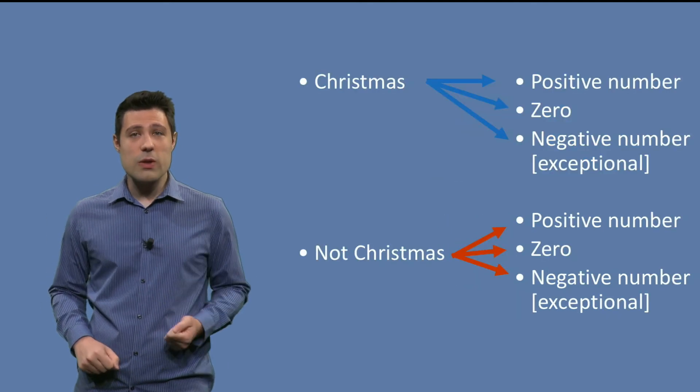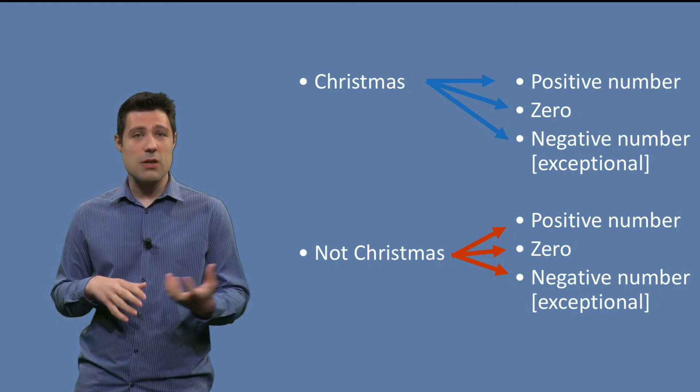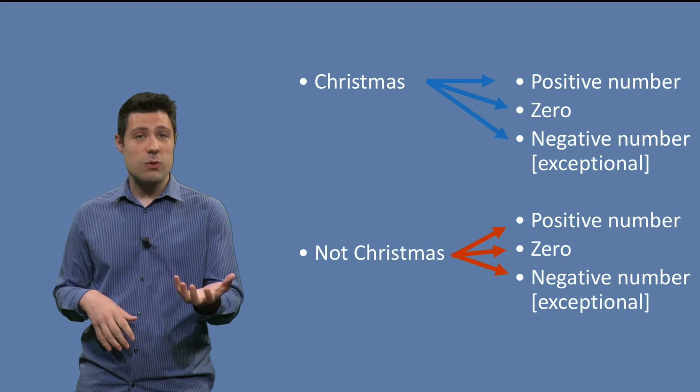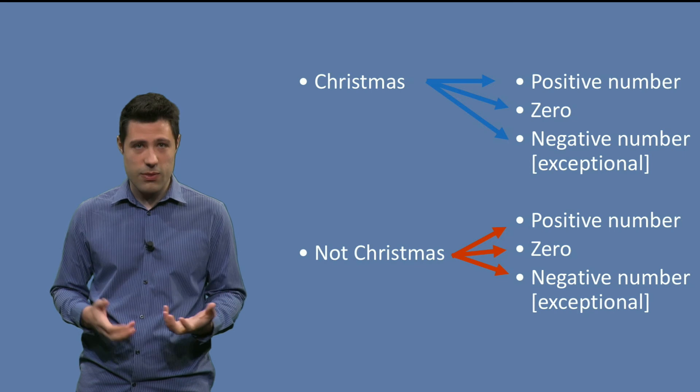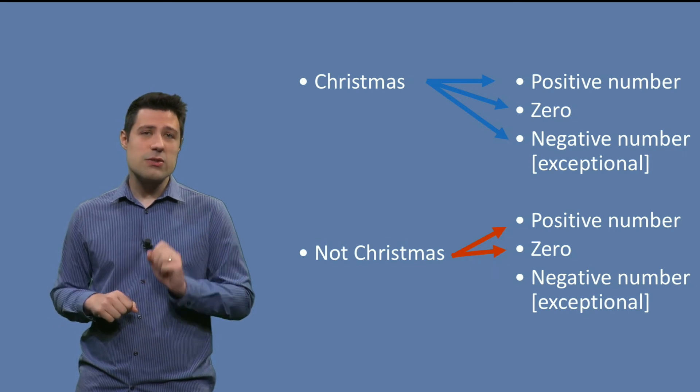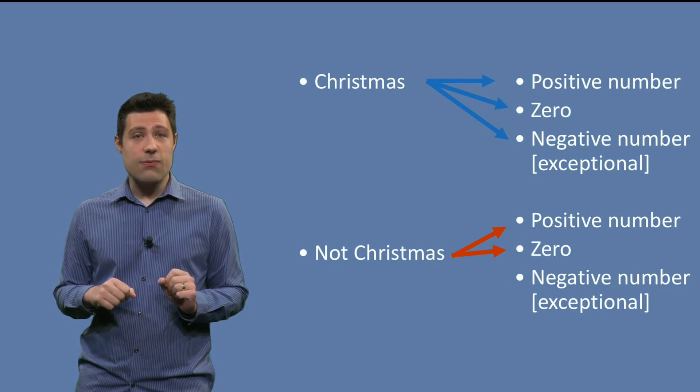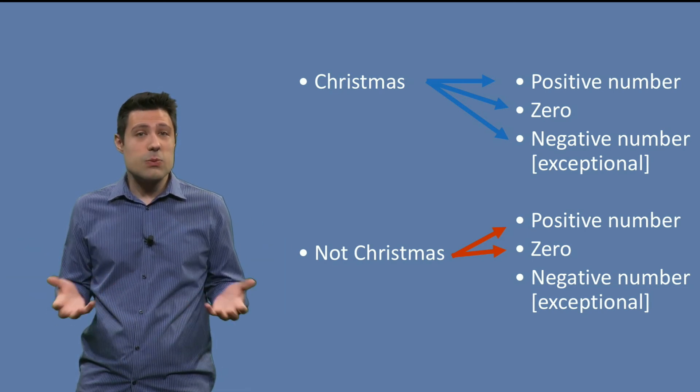Then what we do is we test all the possible combinations. So Christmas with positive number, Christmas with zero, Christmas with negative number, not Christmas with positive, not Christmas with zero, not Christmas with negative number. We have six combinations. This is still doable. But then imagine that if we have more variables and more characteristics, this number can explode.